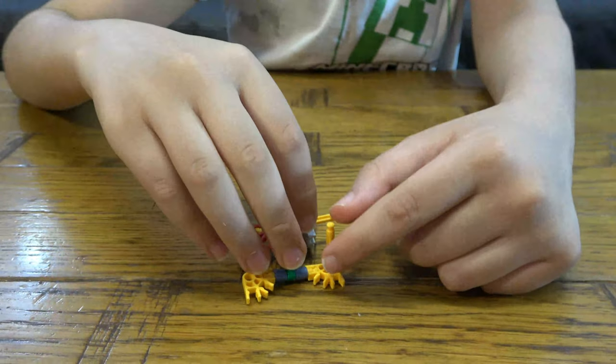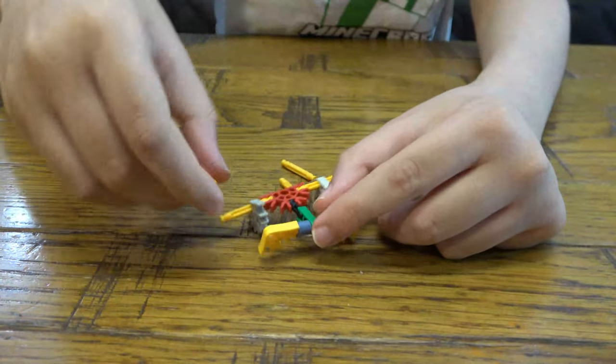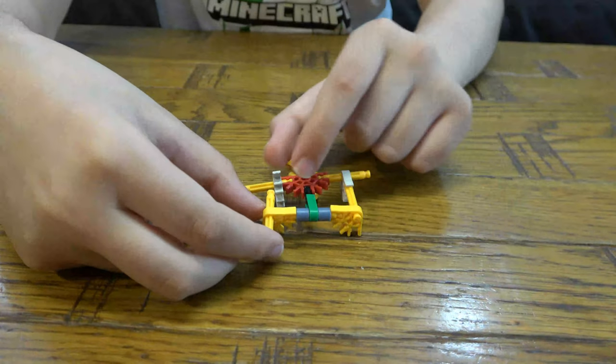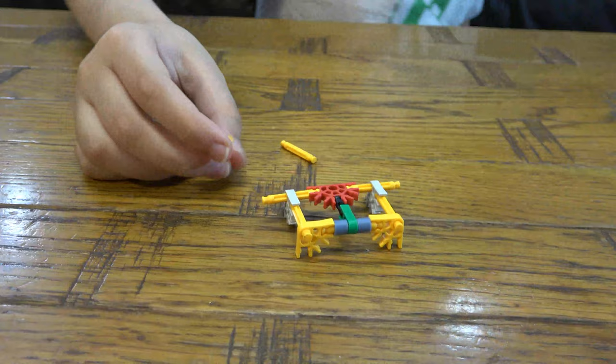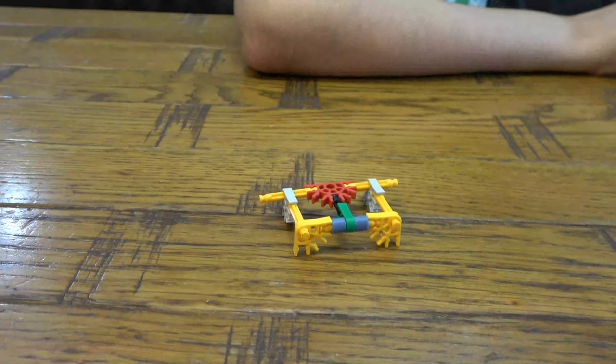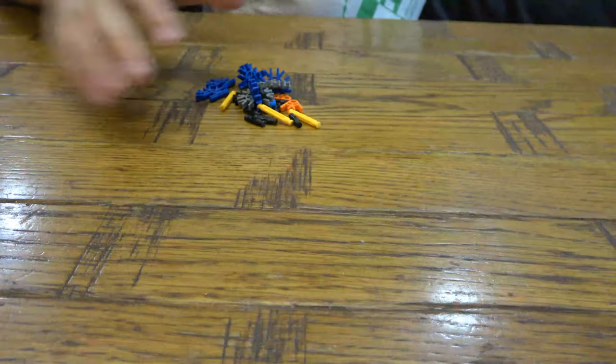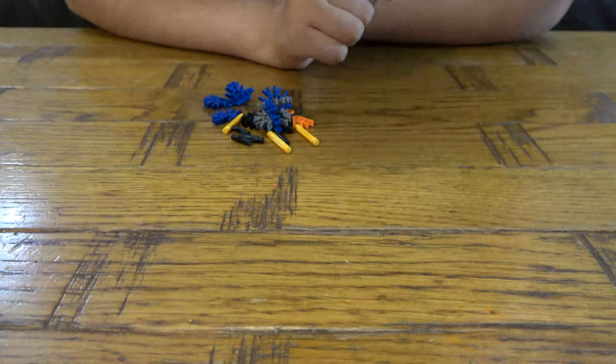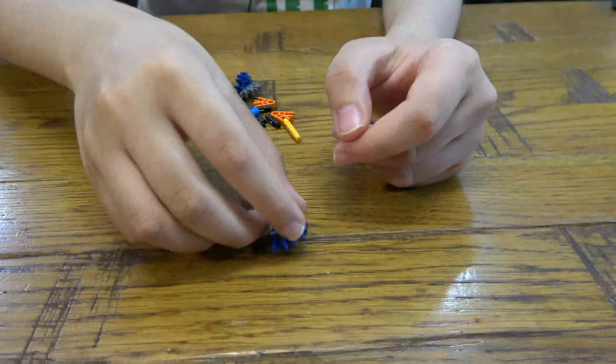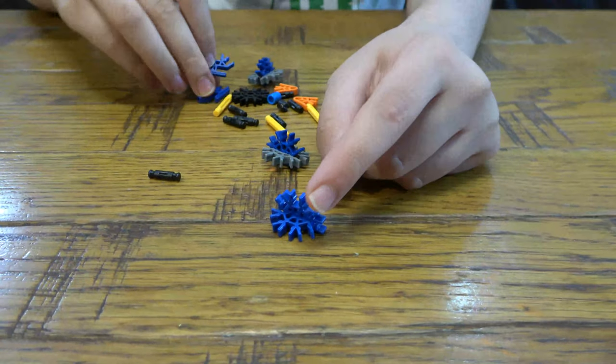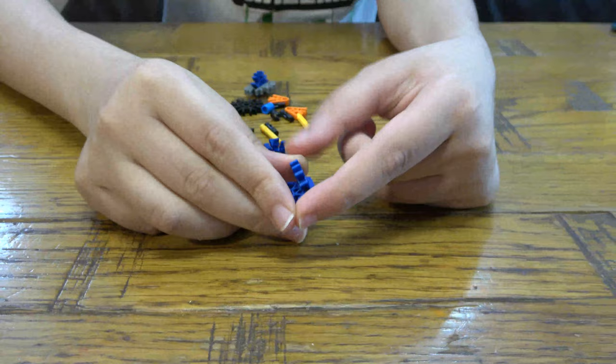And then get this. And then you clip it on to that. Same thing for this side. There we go. I'm going to put this aside and get this. So we're going to get this first, which is basically these two put together. Like that. There we go.